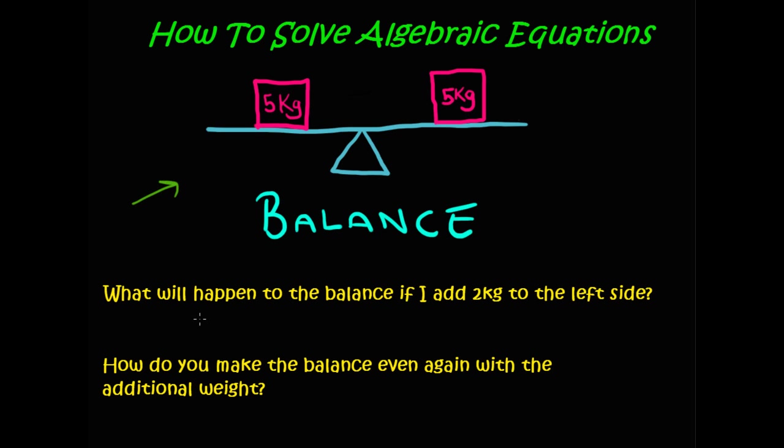Notice the balance in the middle of this diagram. The balance has a 5 kg block on the left side as well as a 5 kg block on the right side. What will happen to the balance if I add 2 kg to the left side?